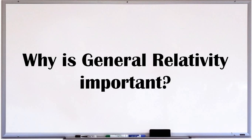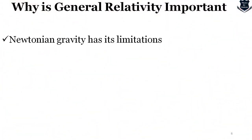First, we need to understand why general relativity is important. Newtonian gravity has its limitations — and I want to be clear, any scientific theory is good in its own framework. However, Newtonian gravity sometimes gives incorrect predictions. Till now, most calculations we do are based on Newtonian mechanics, which is perfectly valid, but Newtonian gravity does give wrong predictions in certain cases which general relativity describes.